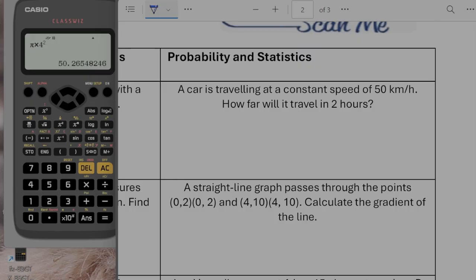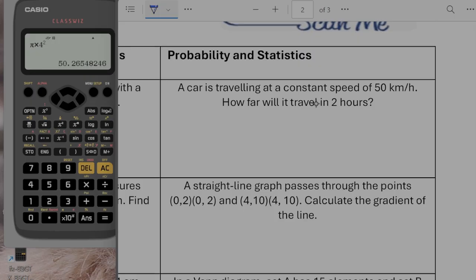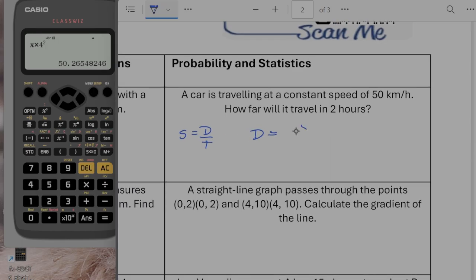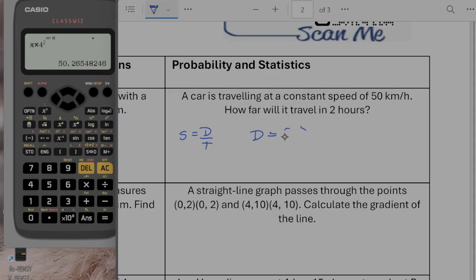Right, final column. So a car is travelling at a constant speed of 50 kilometres per hour. How far would it travel in 2 hours? Well if speed is equal to distance divided by time, distance is going to be equal to speed times time. Speed times time. So 50 times by 2 is going to give us 100 miles. Oh sorry, 100 kilometres.